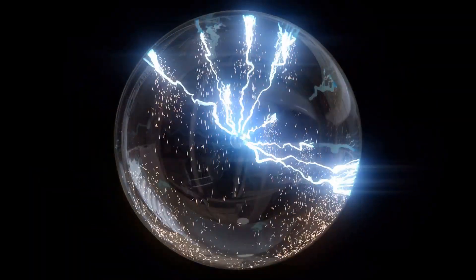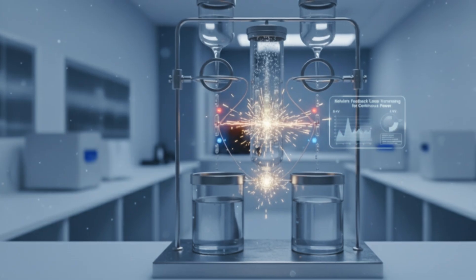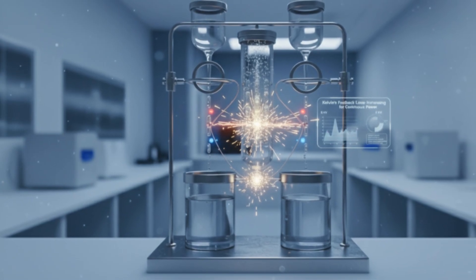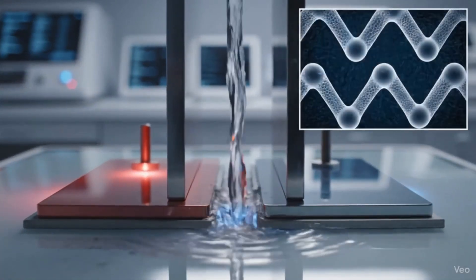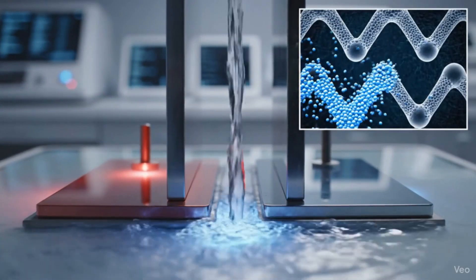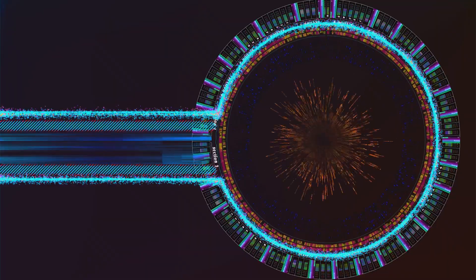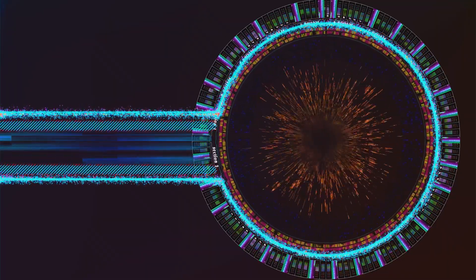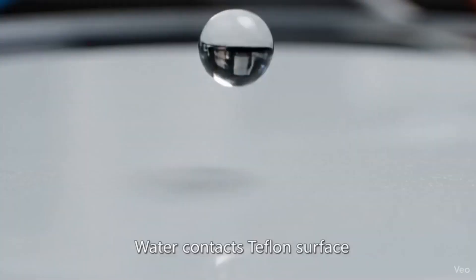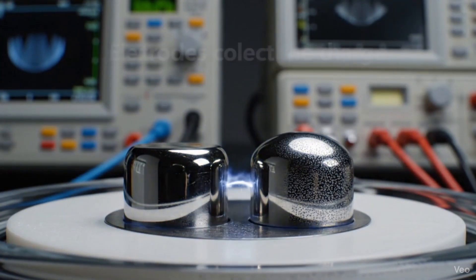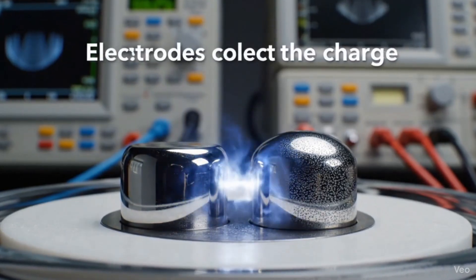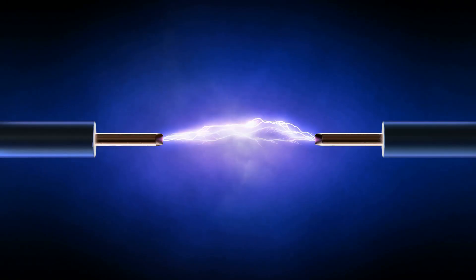This device used a principle called electrostatic induction. This is where a charged object can influence charges in a nearby neutral object without touching it. Kelvin's device used this in a clever feedback loop. A tiny random charge on one side would induce an opposite charge in the falling water stream on the other side. This charge would collect in a bucket, which then amplified the induction on the first stream. This process would rapidly escalate until a high enough voltage was generated to create a literal spark, a tiny lightning bolt, all from falling water droplets.